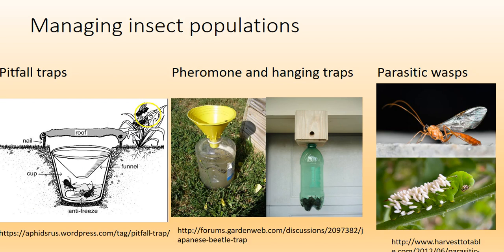For insects, pitfall traps work similarly — you have a cup with a funnel, they go in and fall through. Pheromone hanging traps are also used. We have one in our backyard with Japanese beetle pheromone. Japanese beetles are incredibly invasive and eat our cherry and apple tree leaves, almost killing them, so we catch them in the trap to remove them.